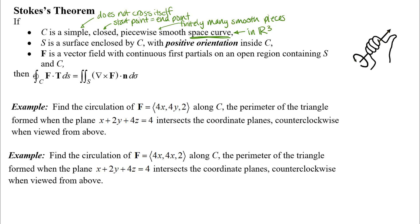S is a surface enclosed by C with positive orientation inside C. Positive orientation is indicated in this little diagram here — it is another right-hand rule. The idea is that if you put your fingers of your right hand in the direction of the orientation of the curve, indicated by the little arrow, and curl your fingers around the orientation of that curve, you can define a normal vector to the surface that follows that right-hand rule.